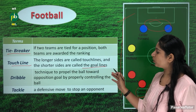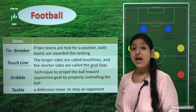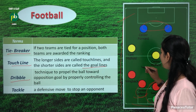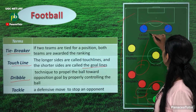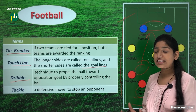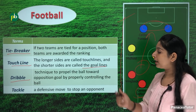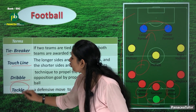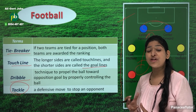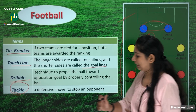The shorter sides are called goal lines. Touch line and goal lines are both terms associated with football. The next term is dribble — where one player takes the ball past the other team. Tackle is a defensive move to stop the opponent.